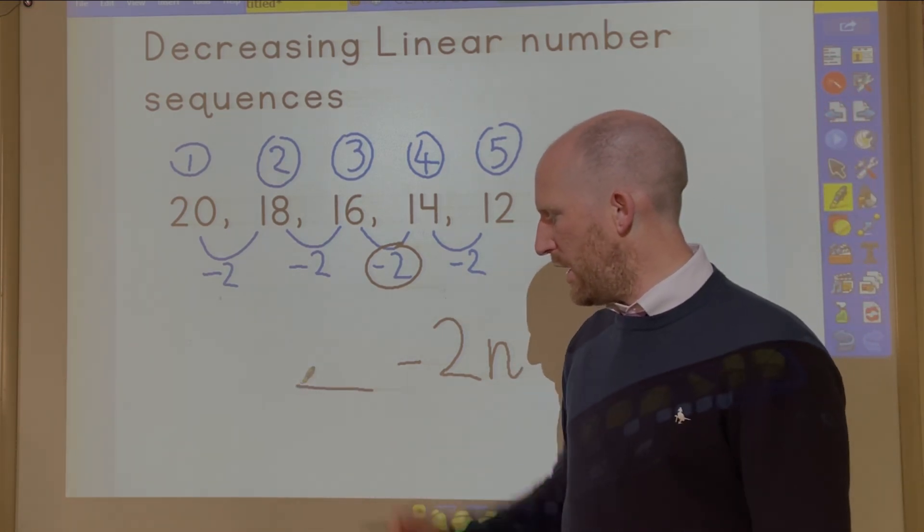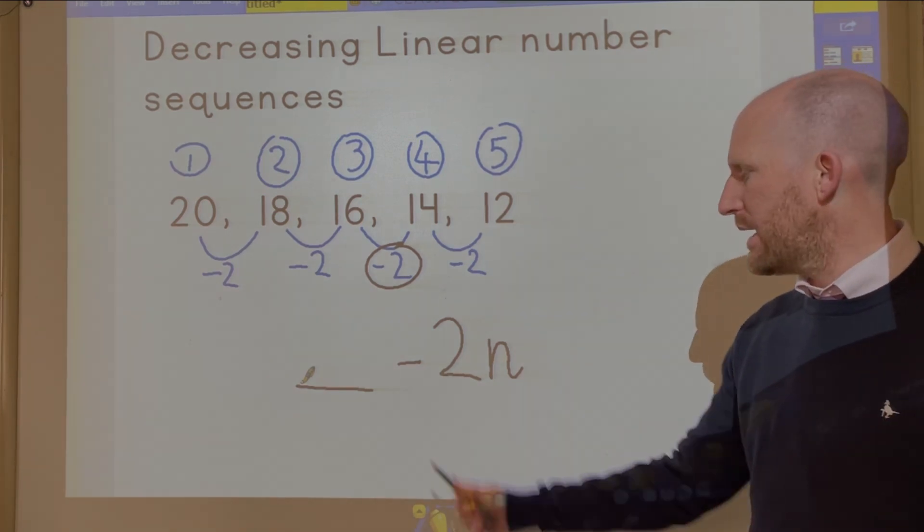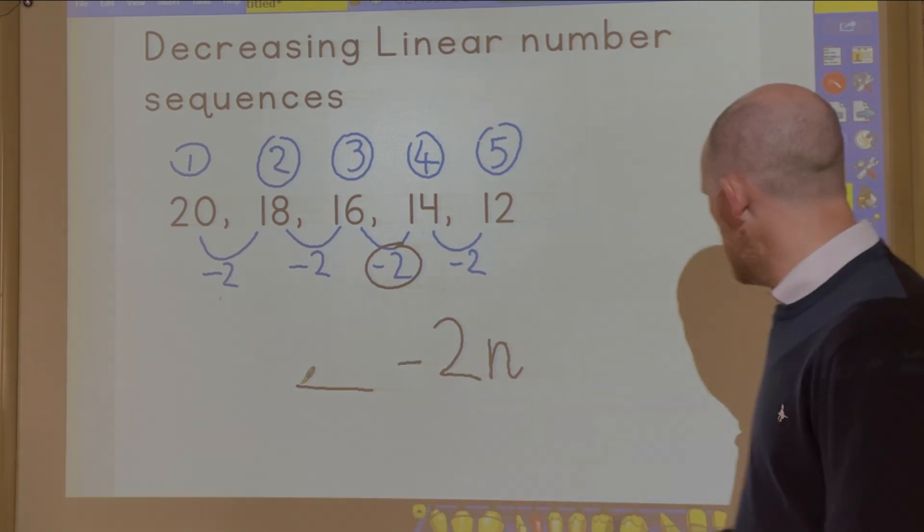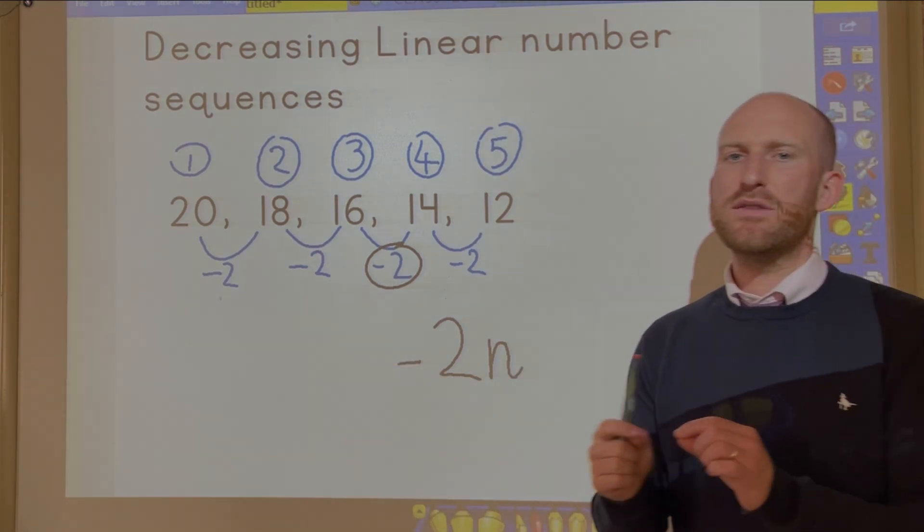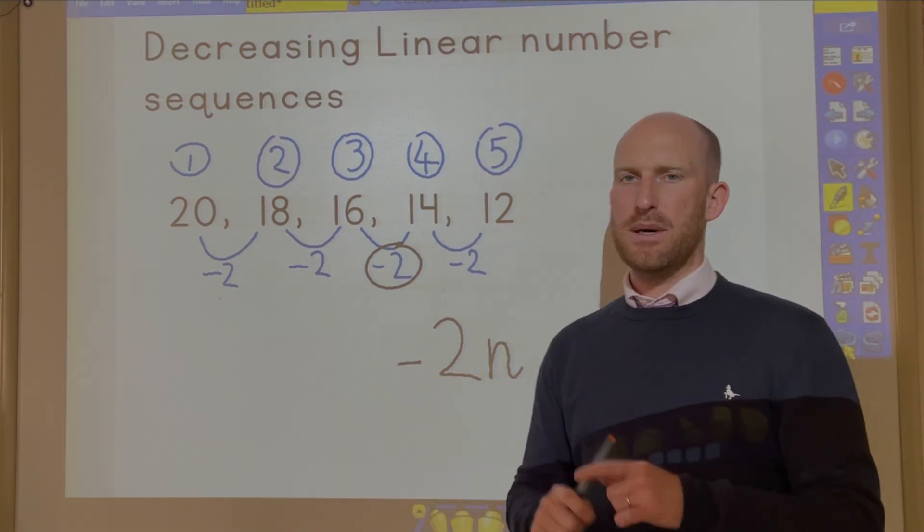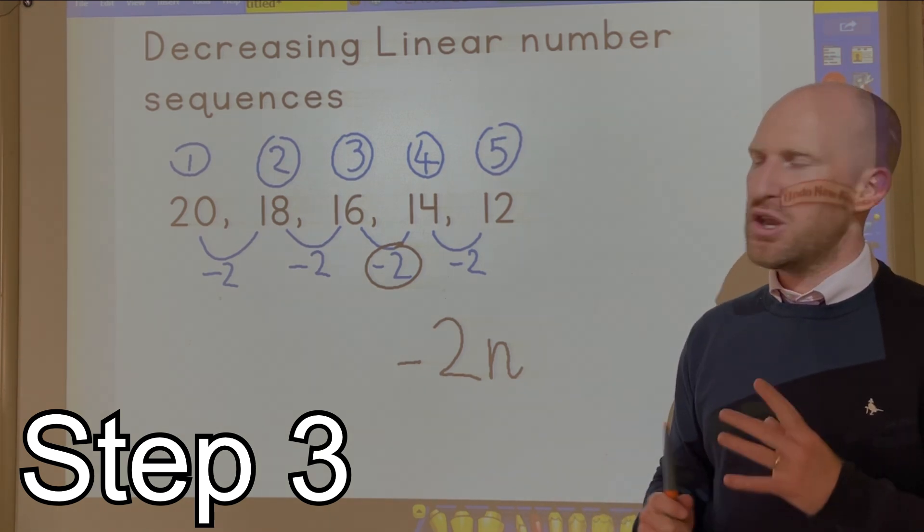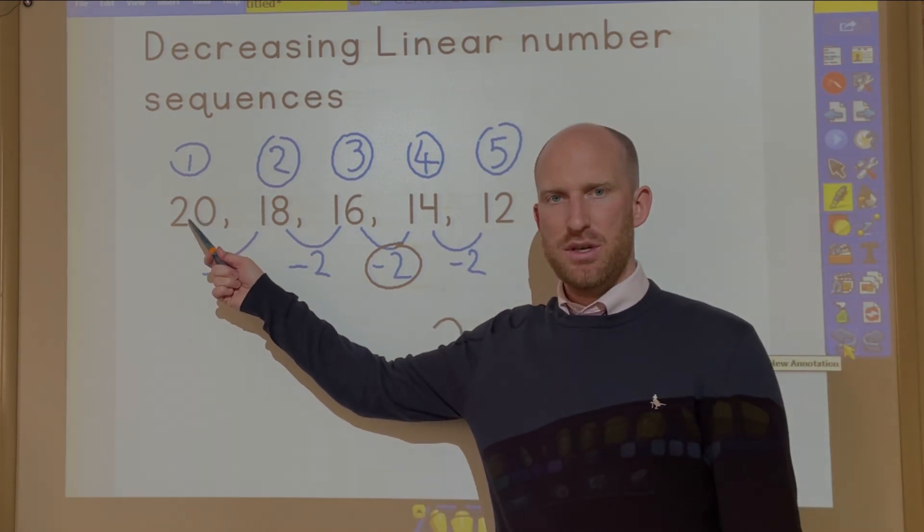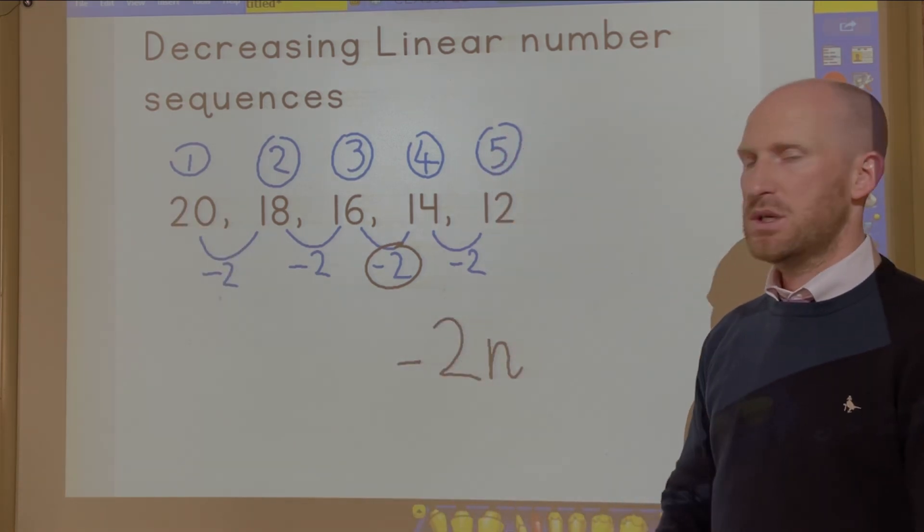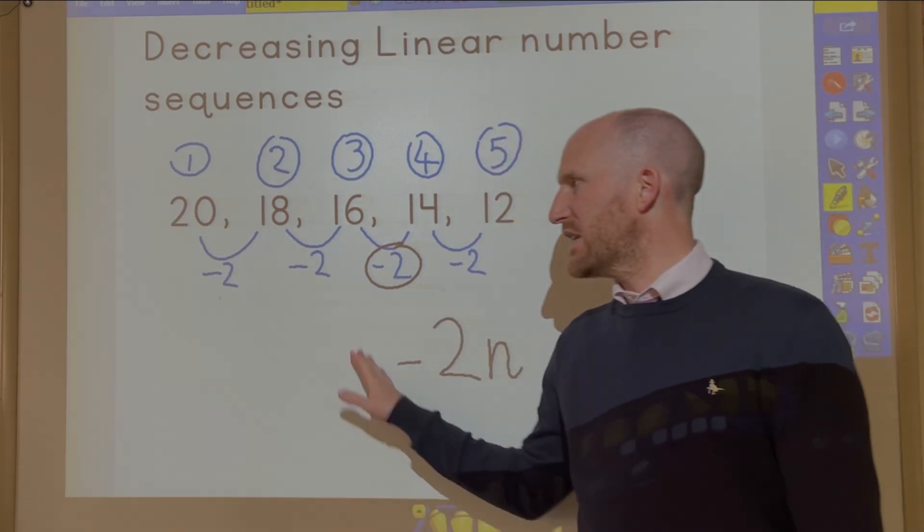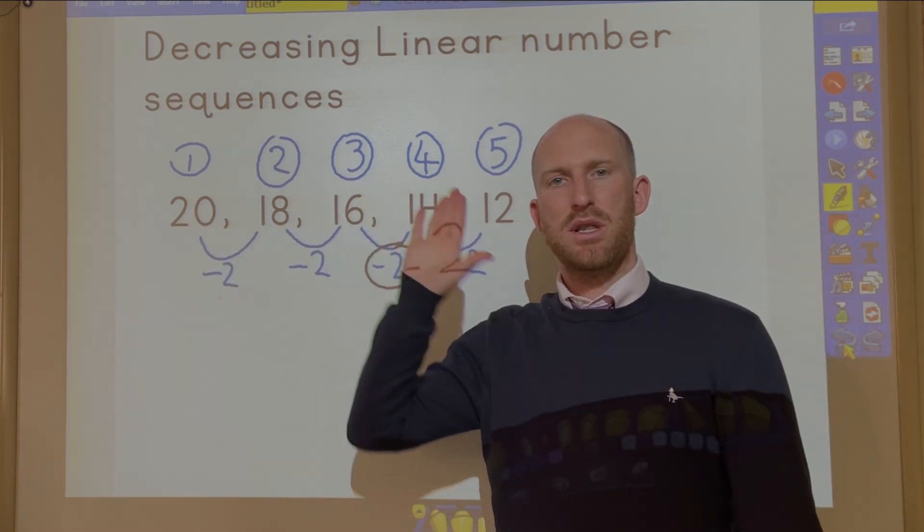Now I just need to figure out what goes at the beginning part of my nth term. At the beginning part we need to write a starting number. The starting number is very simply a number which is larger or greater than the first number in your sequence. So I already know the starting number is going to be larger than 20.